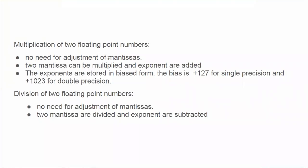In this video we are going to see about the multiplication of two floating point numbers. In the multiplication of two floating point numbers there is no need for the adjustment of the mantissa, just like in addition and subtraction where we have to adjust the exponent so that both exponents must be the same. Here there is no need for adjustment of exponent, and in turn no need to adjust the mantissa portion either.